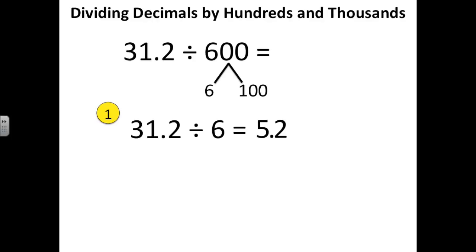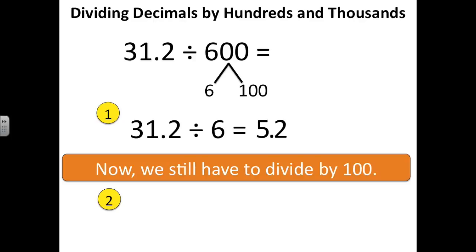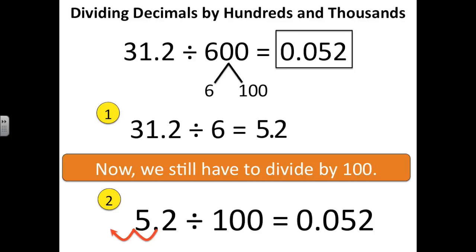Again, if this is difficult to do in your head, that is perfectly fine for you to write it down on paper and solve it. Now my answer is 5 and 2 tenths. Now we have a second step. We still have to divide by 100. So we're going to take 5 and 2 tenths and divide that by 100. So 5 and 2 tenths divided by 100 equals 52 thousandths. We move the decimal point two places to the left to make it 100 times smaller. Our final answer then is 52 thousandths.